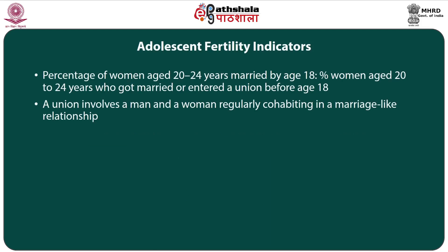Continuing on adolescent fertility indicators, we have the percentage of women aged 20 to 24 years who were married by age 18. The numerator is the number of women aged 20 to 24 years married by age 18; the denominator is all women aged 20 to 24. The condition is that the woman must have gotten married or entered a union before age 18. When we talk about a union, we mean a man and woman regularly cohabiting in a marriage-like relationship.